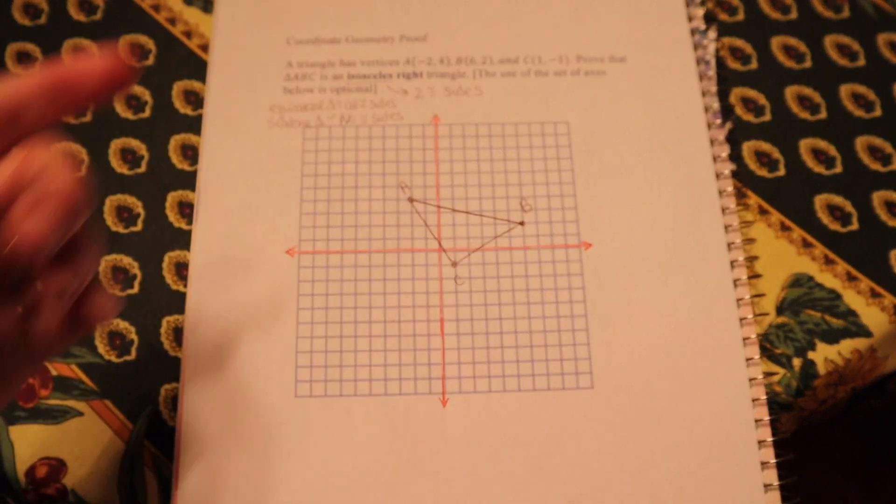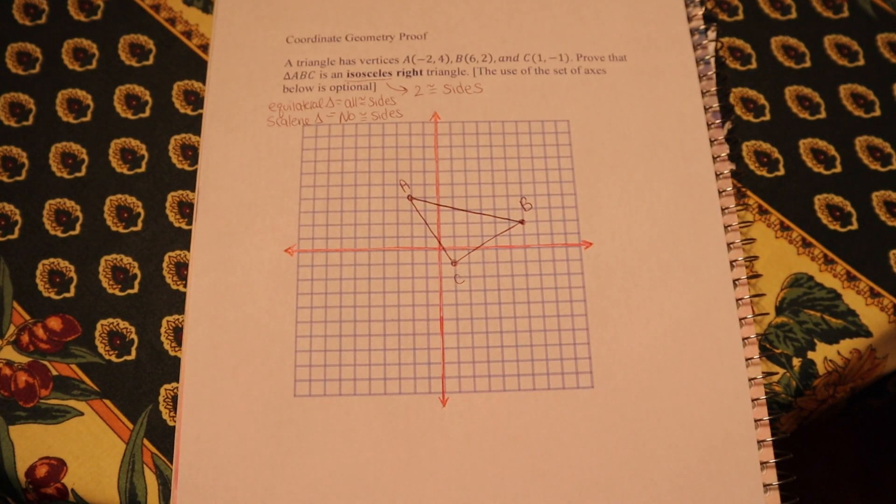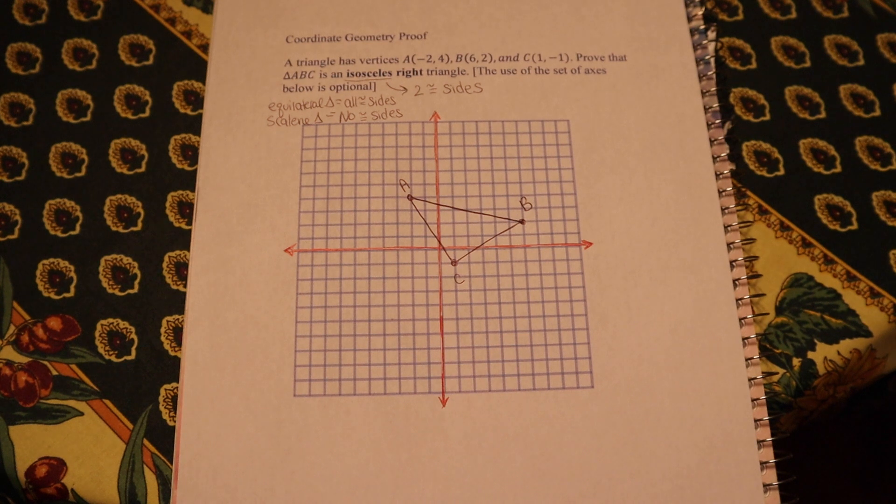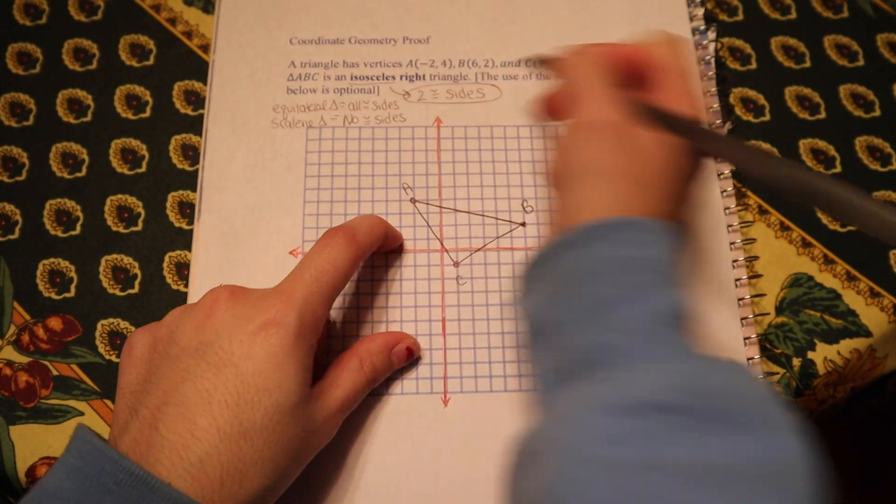Now the reason why it's important to know all three kinds is because this question may be altered, and the question may be asking you to classify what kind of triangle it is. So if you were asked to classify based on whether you have no equal sides, two equal sides, or all three equal sides, you would be able to say which triangle it is. But for this problem, it's isosceles, so we know we're going to have two congruent sides.